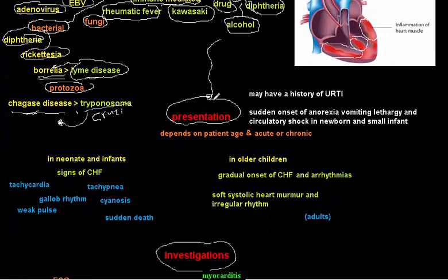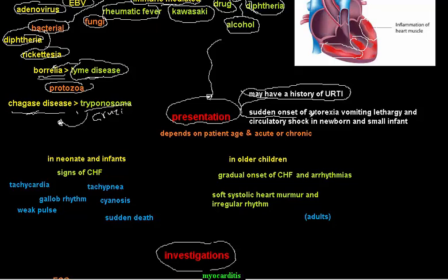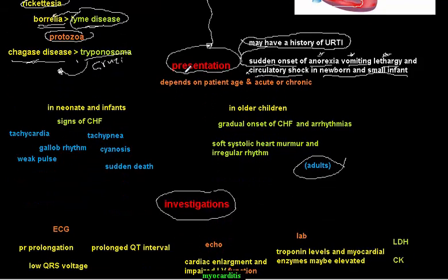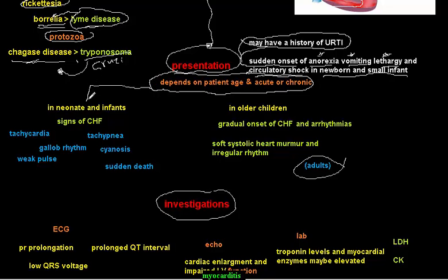Regarding presentation, sometimes there is a history of upper respiratory tract infection followed by sudden onset of anorexia, vomiting, lethargy, and circulatory shock — these are non-specific symptoms. This pattern is most common in newborns and small infants. In adults, myocarditis may often be asymptomatic. Presentation depends on patient age and whether it is acute or chronic.